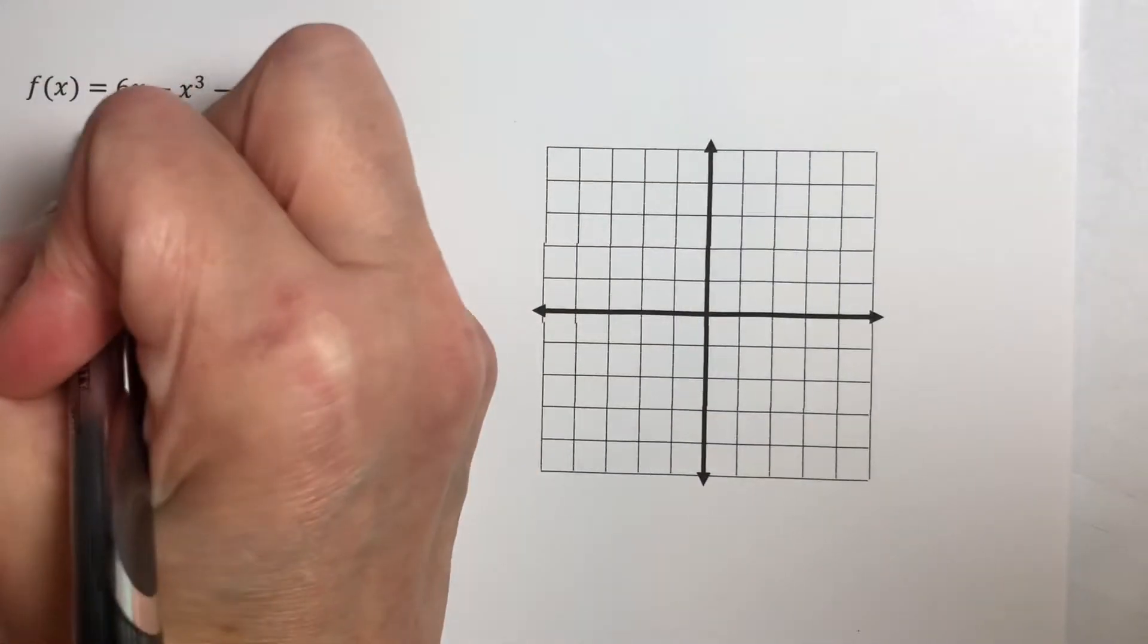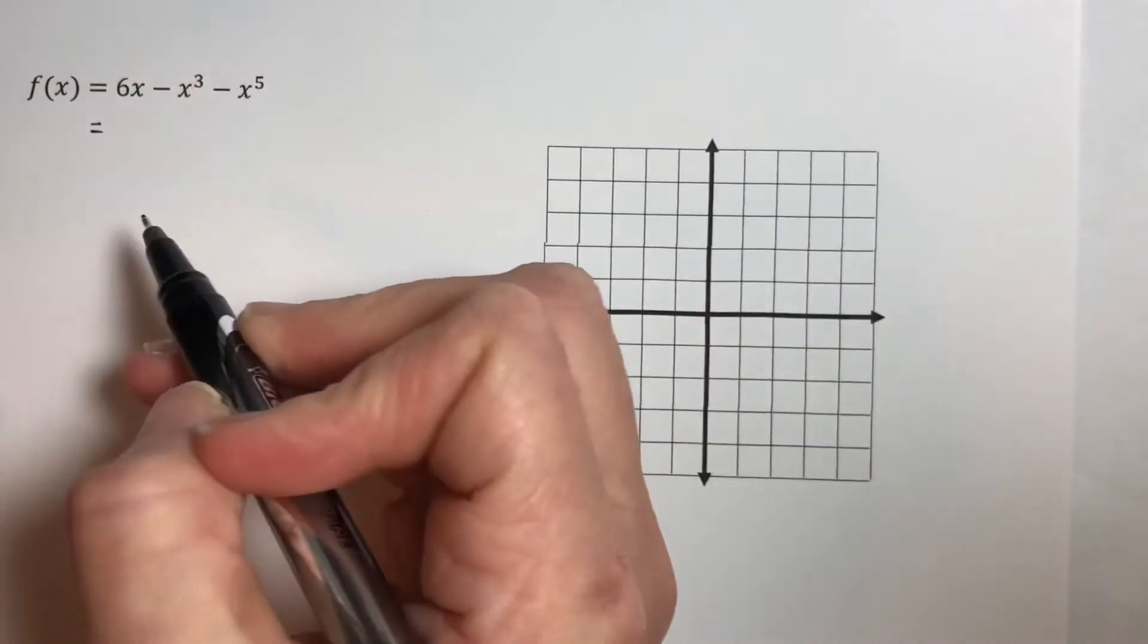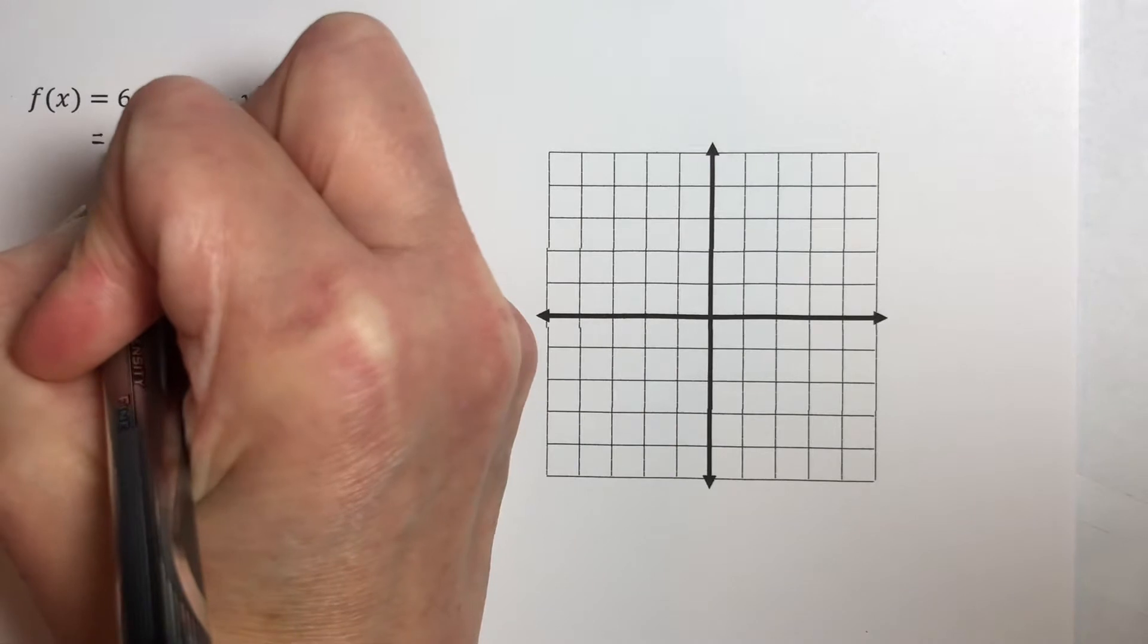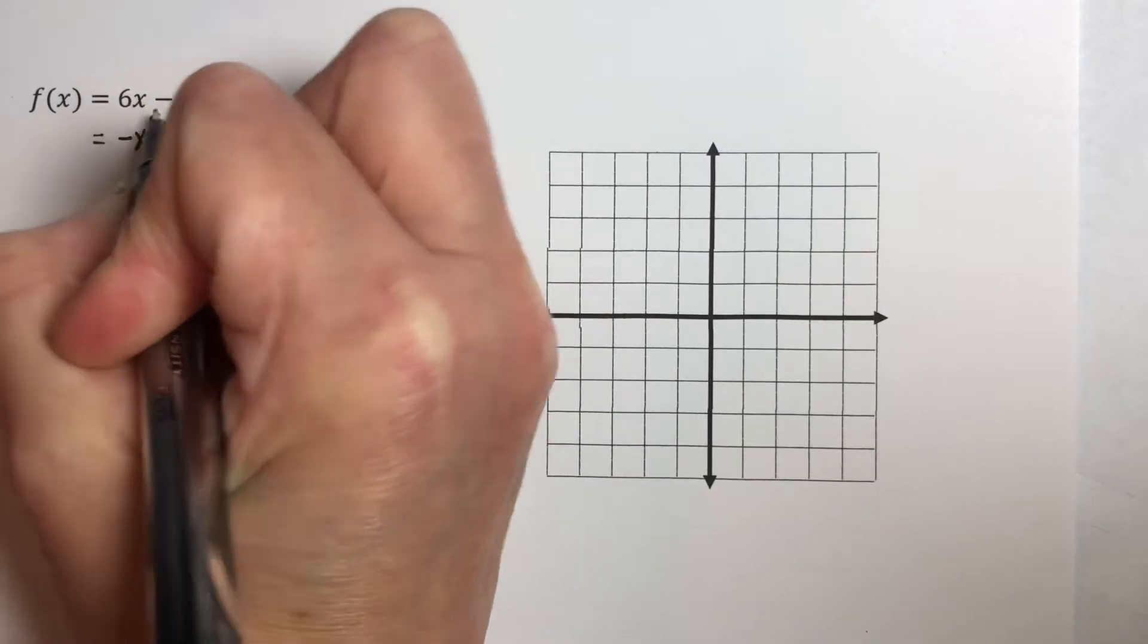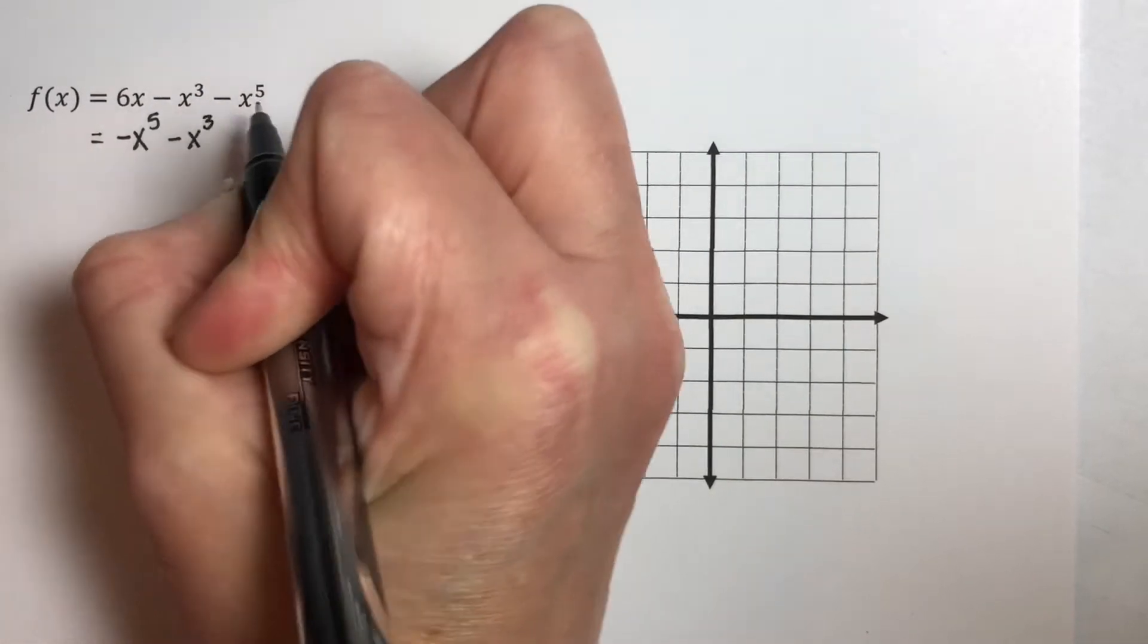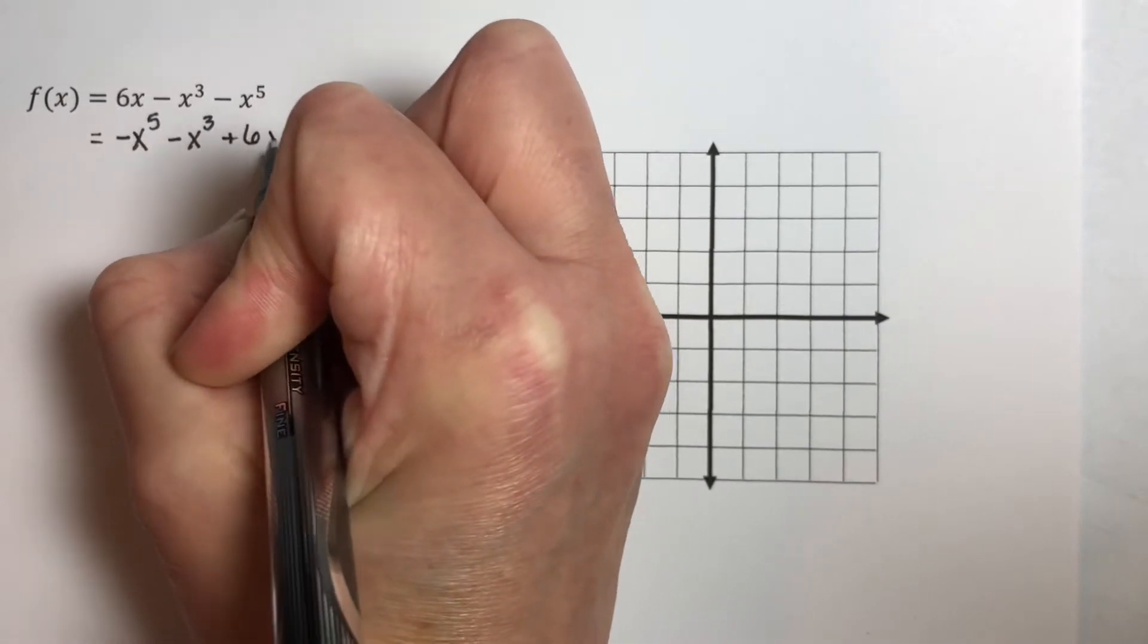The first thing I'm going to do is turn it around so that we are in descending power order. So I start off with negative x to the fifth, and then I have minus x cubed plus 6x.